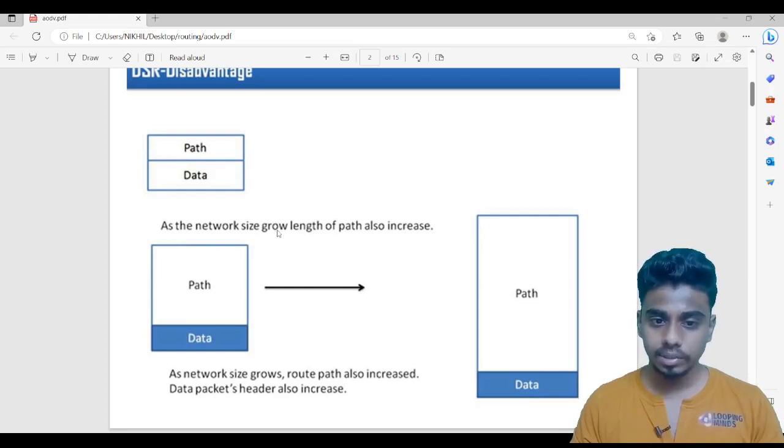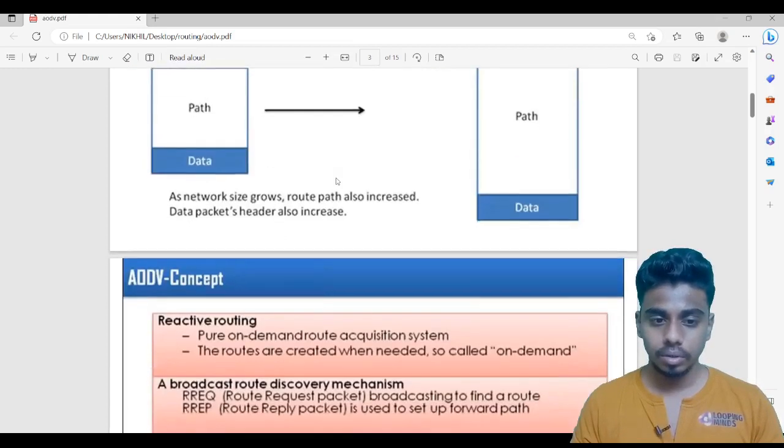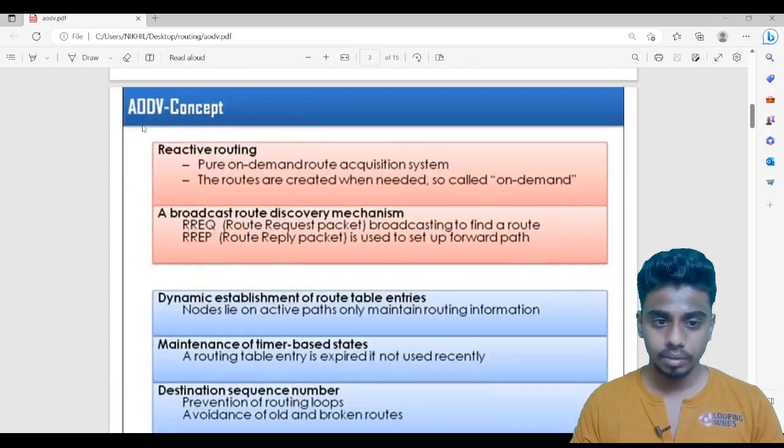As the network size grows, length of the path also increases. As network size grows, route path also increases, data packets header also increases. This is not an effective solution. There has to be some alternative protocol over this DSR protocol. We have come up with this topic.